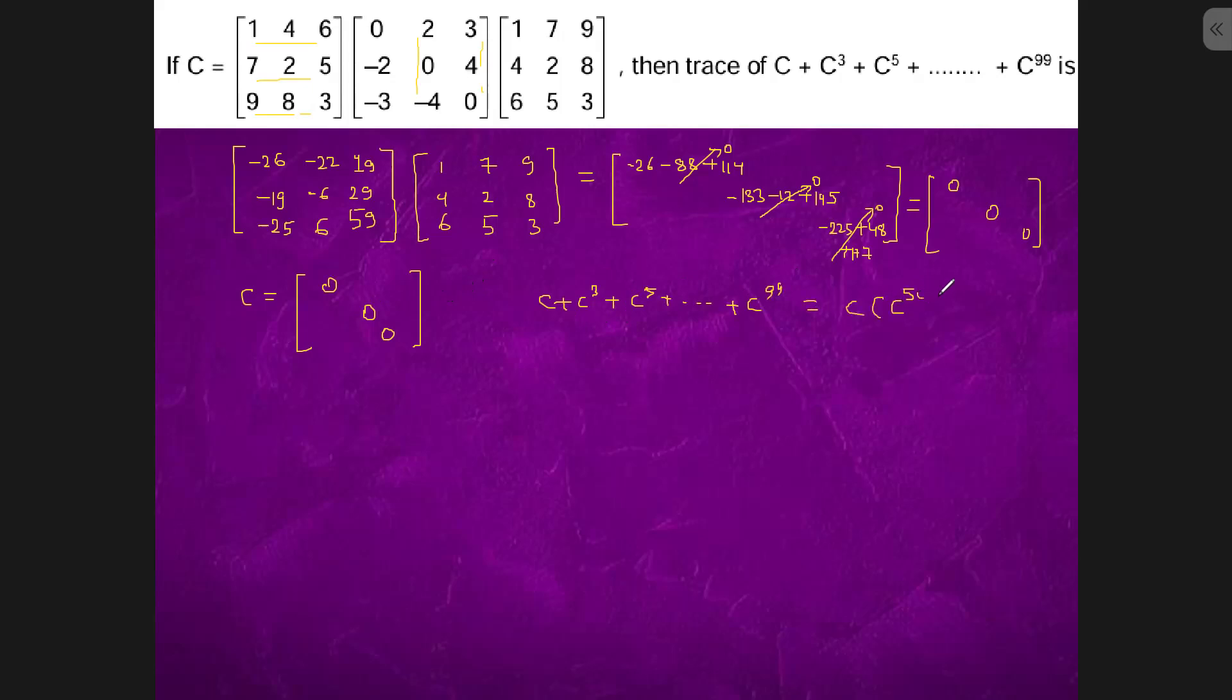C times (C⁵⁰ minus 1) upon (C minus 1). This is what we have. Or simply, what can we do is if we find C³